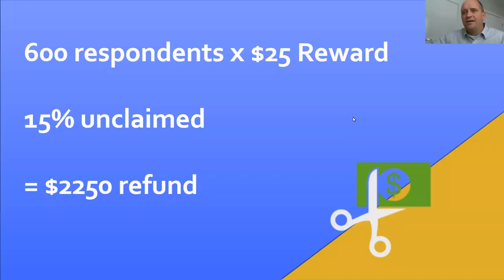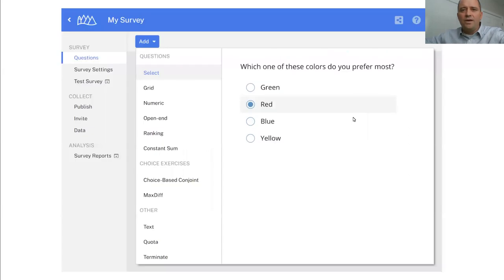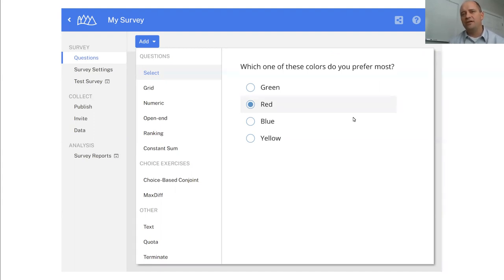Thanks, Jignesh. I'm Justin Luster from Sawtooth Software. I'd love to speak for a few minutes on what we've been working pretty hard on, which is called Discover. Discover is our streamlined web-based survey platform for making surveys. We're really good at making it easy to do conjoint analysis surveys and MaxDiff surveys, and we also have some powerful general survey capability. As a thank you for watching this webinar today, we're going to offer you a 90-day full-feature experience with Discover.